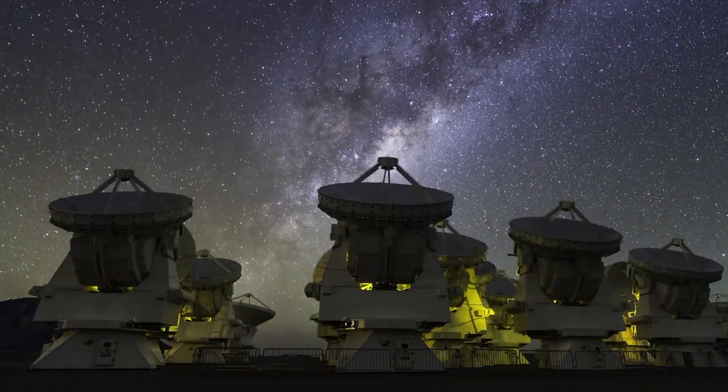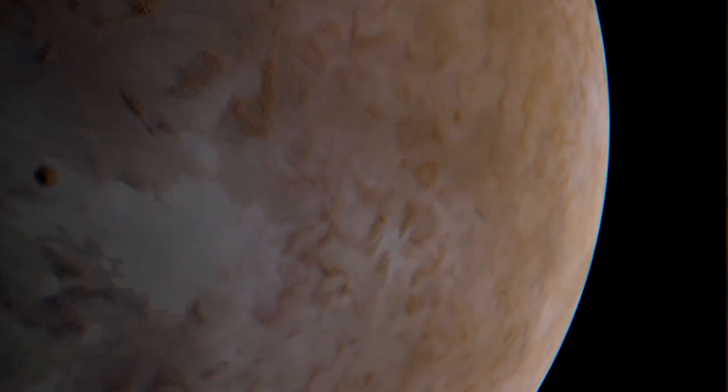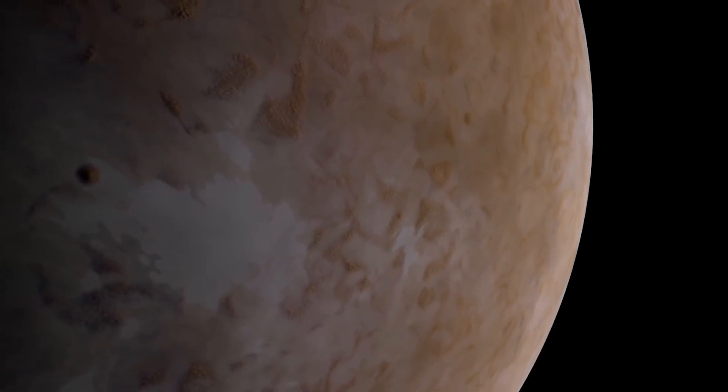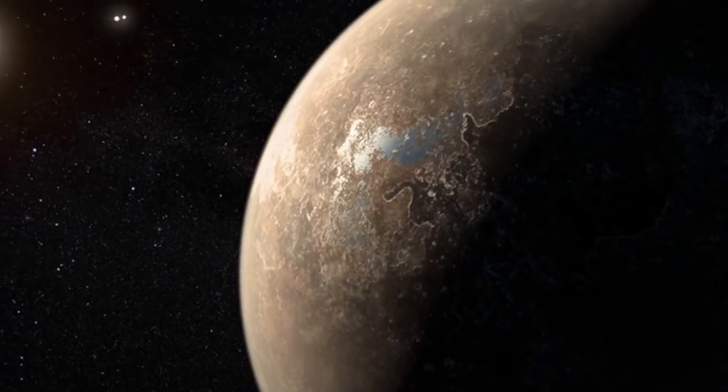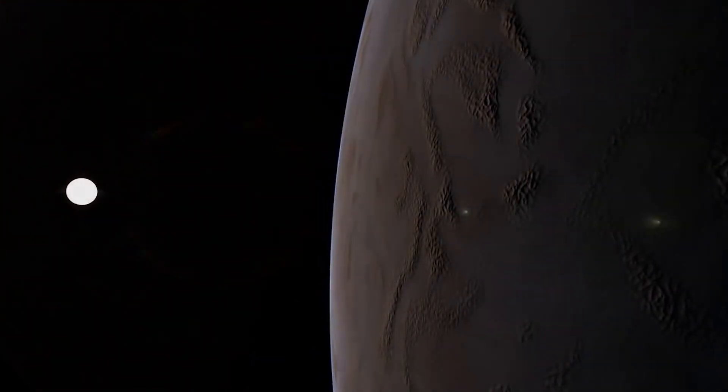By watching the frequent slight fluctuations in Proxima Centauri's hue, scientists have simply determined that Proxima b, which is around 4.2 light years distance from Earth, is exactly where it should be.